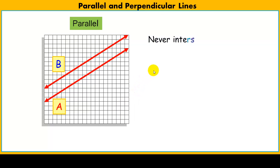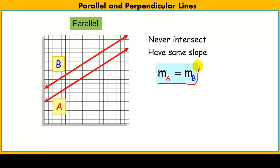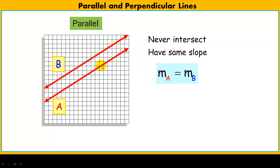In algebra, parallel lines have a more formal definition. We don't just say they never intersect — we say they must have the same slope. If I have line A and line B, their slopes must be equal. If two equations have the exact same slope, they are by definition parallel. And if two lines are parallel, they must have the same slope.